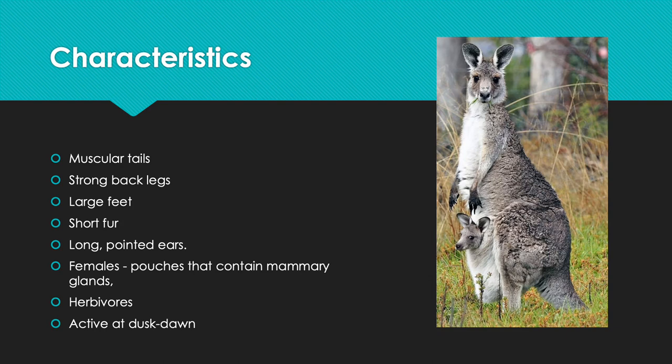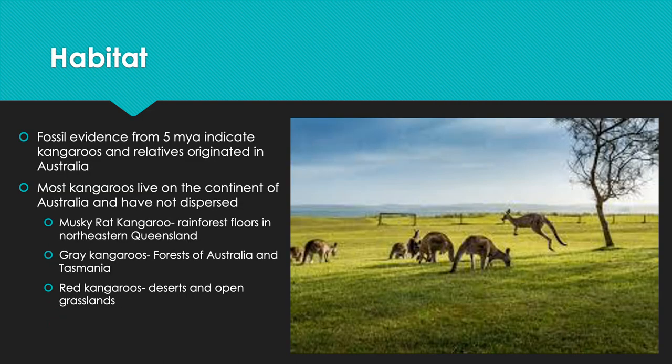Like many herbivores, kangaroos have a complex digestive system that allows them to regurgitate food, which can then be broken down to remove more nutrients — a process known as chewing the cud. Kangaroos are typically active at dawn or at night and spend most of their time foraging. Their habitat is mainly in Australia; you won't find them anywhere else.